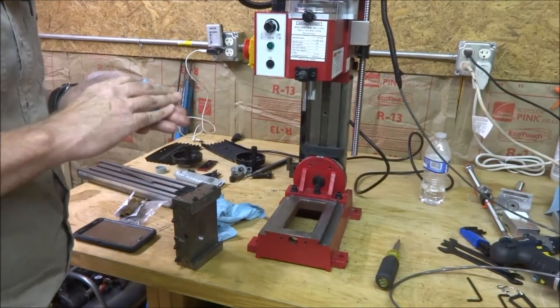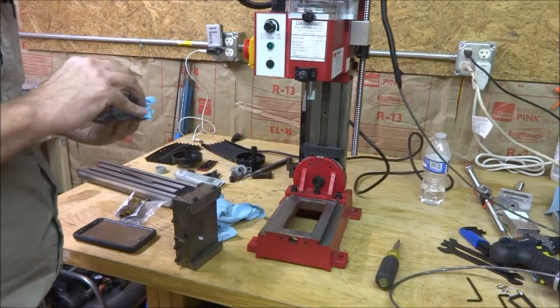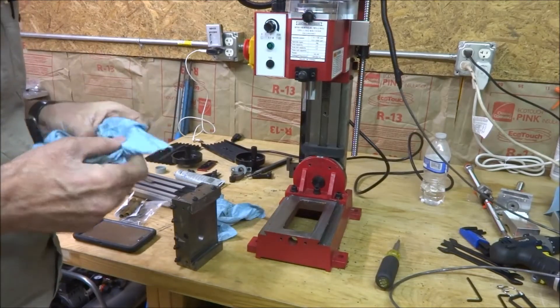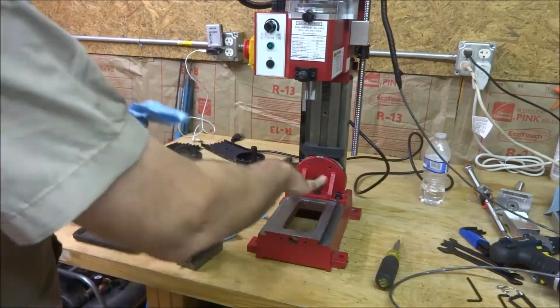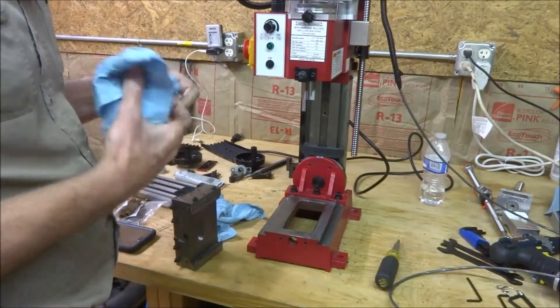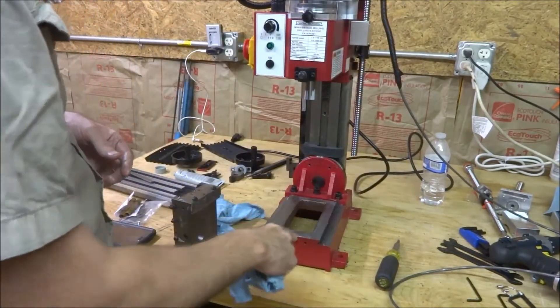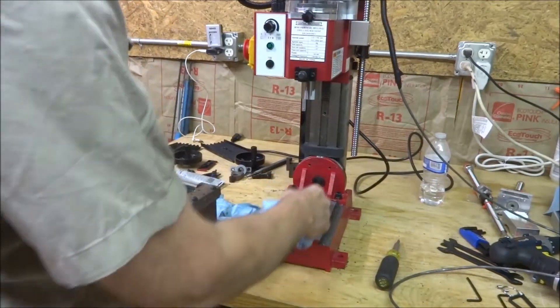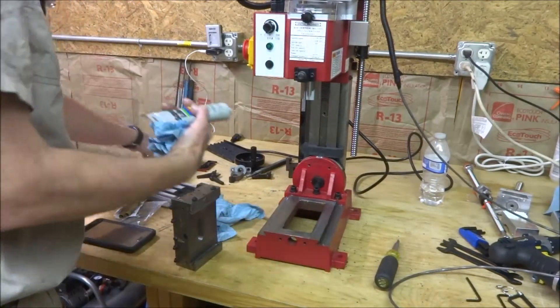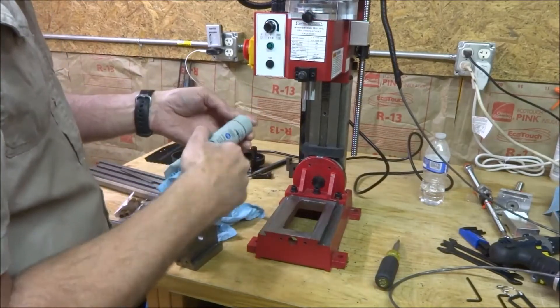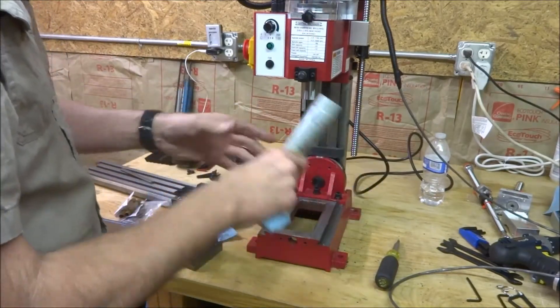Now I'm gonna put the y-axis back on. I cleaned it up, made sure there wasn't any dirt and particles from drilling that fell down there. Put a new layer of grease on there. I just used some synthetic super lube stuff I got from Home Depot.